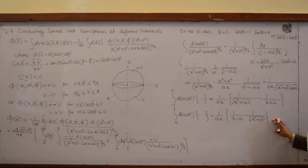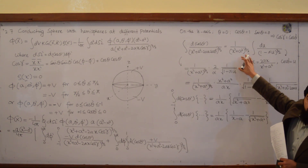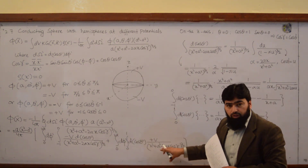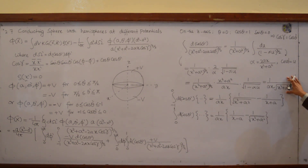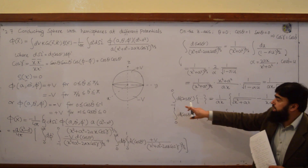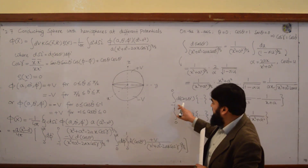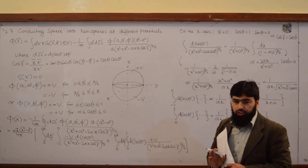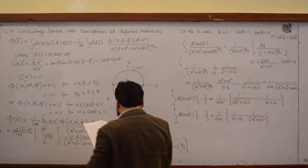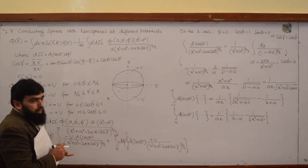So we solved the general integral, which was similar for both cases. After solving the integral, we put in the limits and obtained these two results. Now we put the limits from u = -1 to u = 0. The d-phi integral is yet remaining, so we will have to solve that one as well.